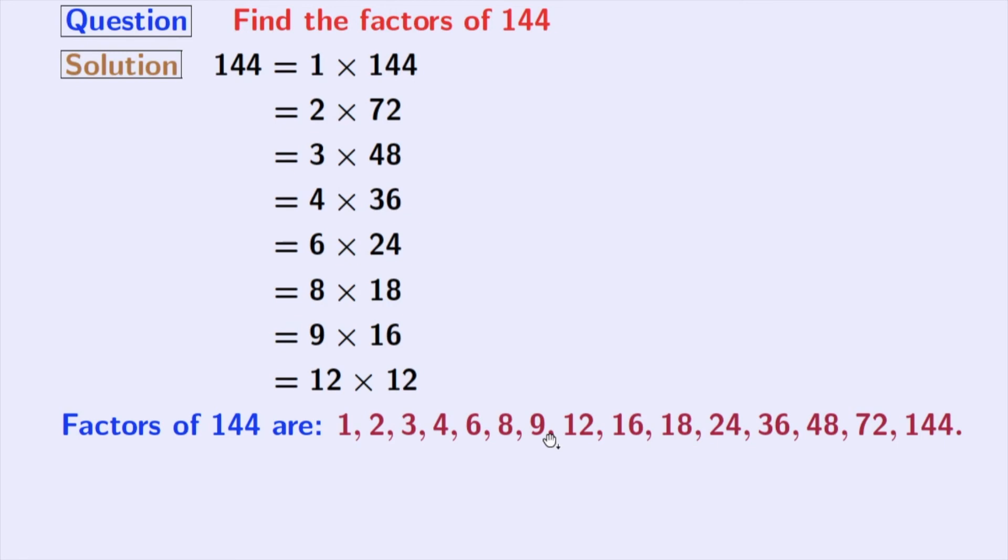Now, if we look at these factors, we can see that 2 and 3 among these numbers are prime numbers because these two numbers do not have any divisor other than 1 and that number itself. So, we can say that the prime factors of 144 are 2 and 3.